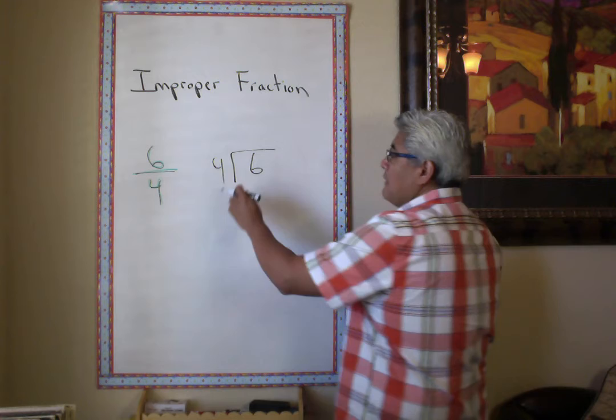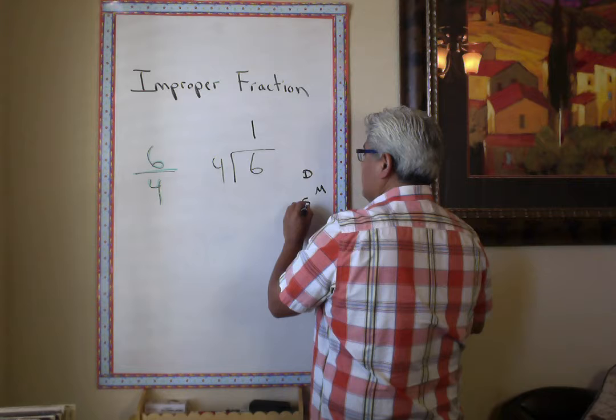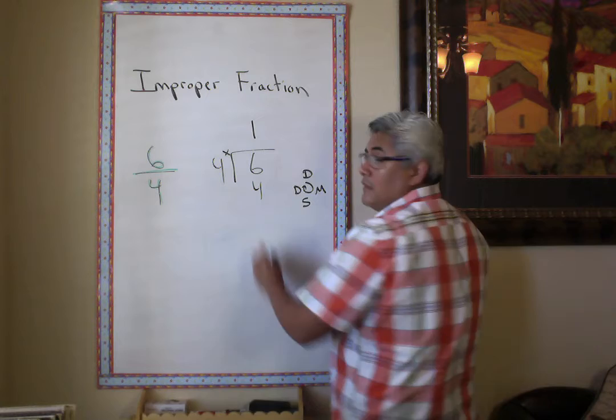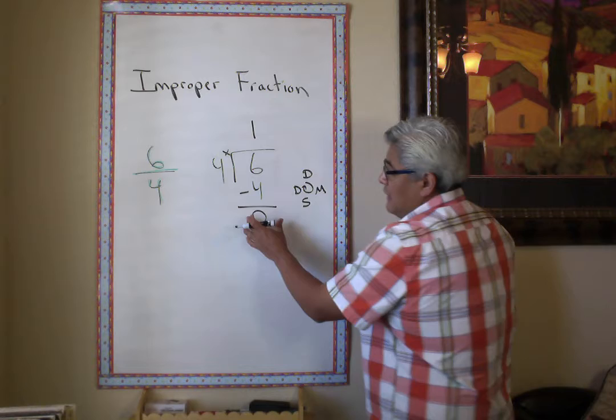Remember the steps: divide, multiply, subtract, bring down — do that loop. What's four times one? Four. Now my next step is subtract. Six minus four is two. That's my remainder, that's what's left over.